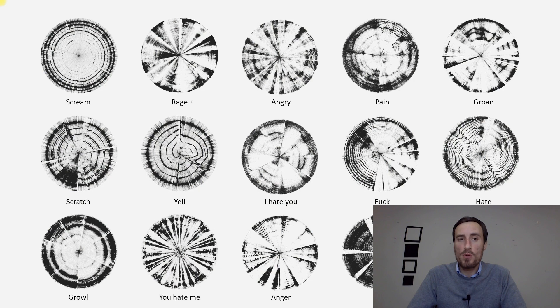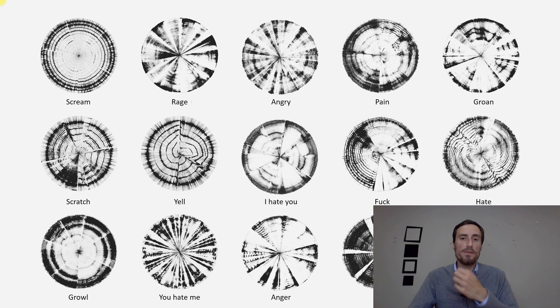Eventually we came up with 15 different types of anger and hate emotions. You can see on the left, starting on the top left: scream, rage, angry, pain, groan, scratch, yell, I hate you, fuck, hate, growl, you hate me, anger, fury, and anger. Those 15 visuals pretty much reflect my method and how I work with code - basically trying to produce information that then controls the visual. If the visual is not good enough, I go back and refine the data, then create the data that will control in turn the visual.